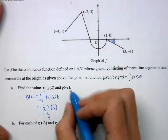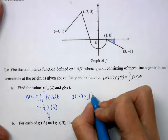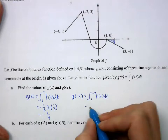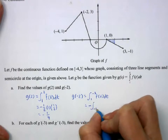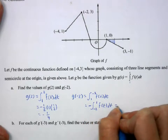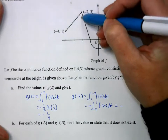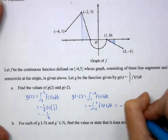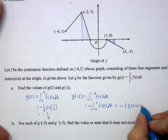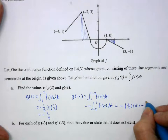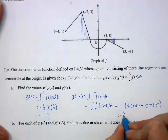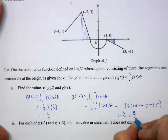g of negative 2 is the integral from 1 to negative 2. Since the smaller number is on top, we change it to negative the integral from negative 2 to 1. That area is one half times 3 times 1, plus negative one half pi r squared where r equals 1. This is a correct numerical answer that can be left in this form on a free response.